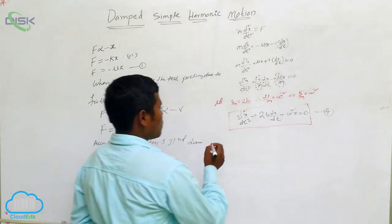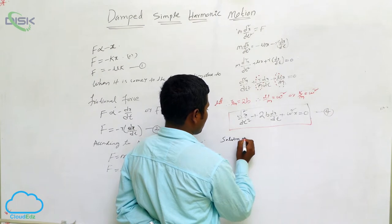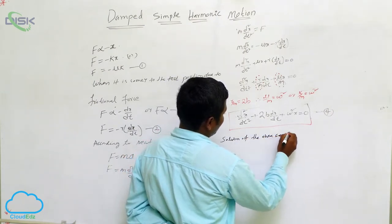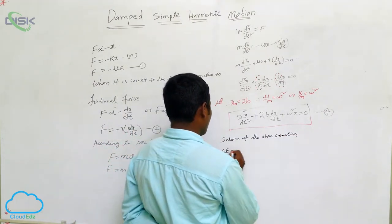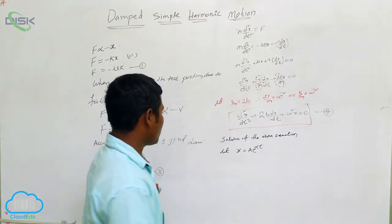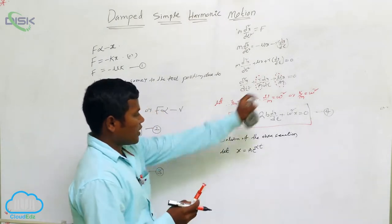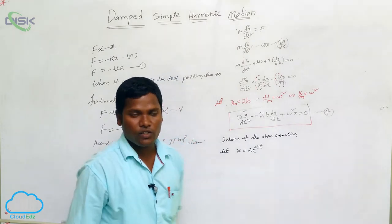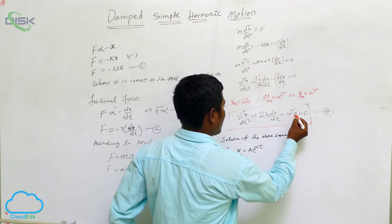For the solution of the above equation, let us assume x is equal to A into e to the power of alpha t. This is one solution. If you observe the above equation, what is there: d²x/dt² plus 2b into dx/dt plus ω²x equals zero. Already we are having the x value.